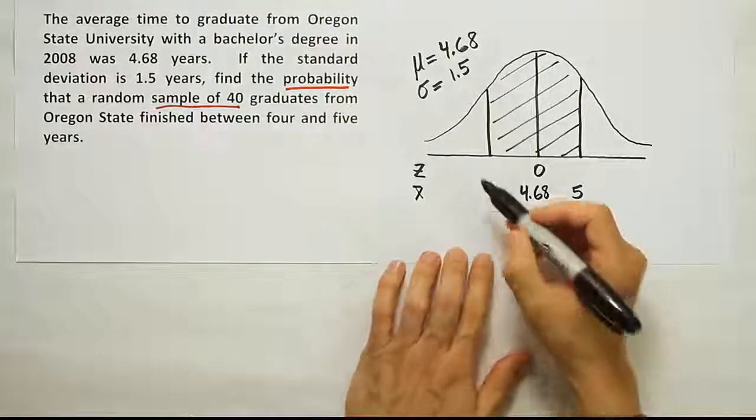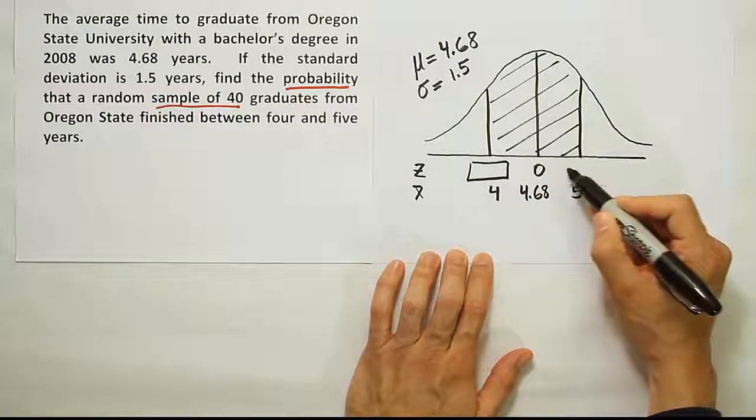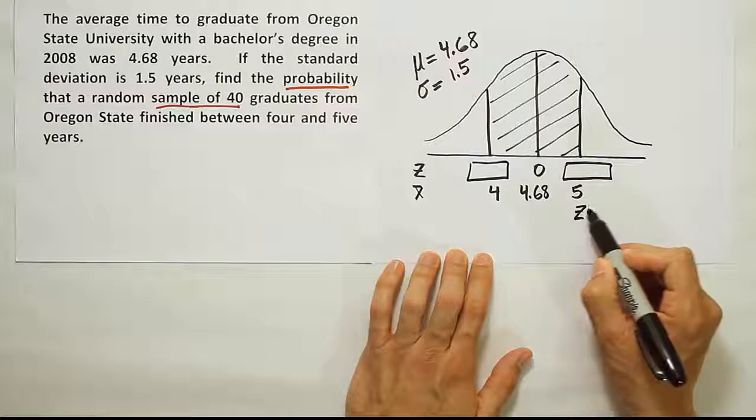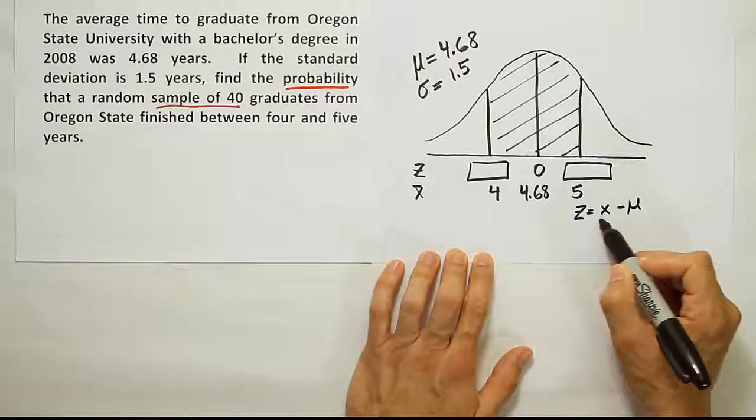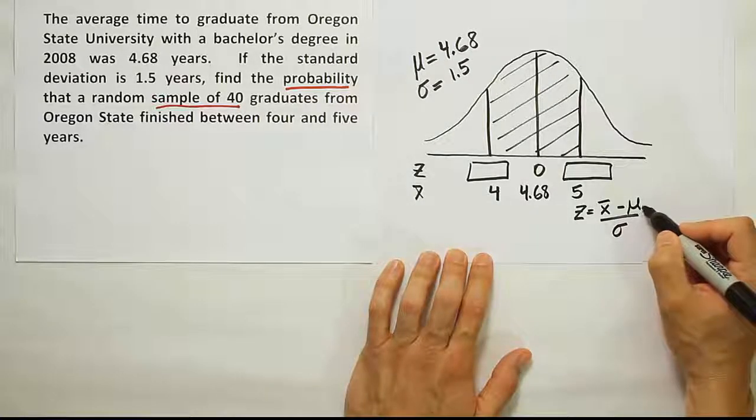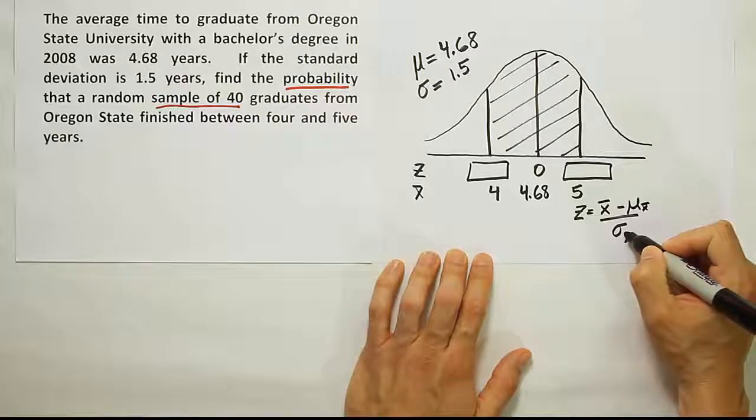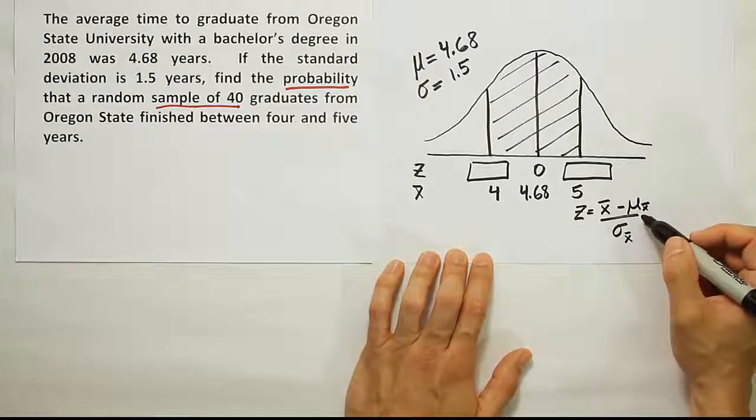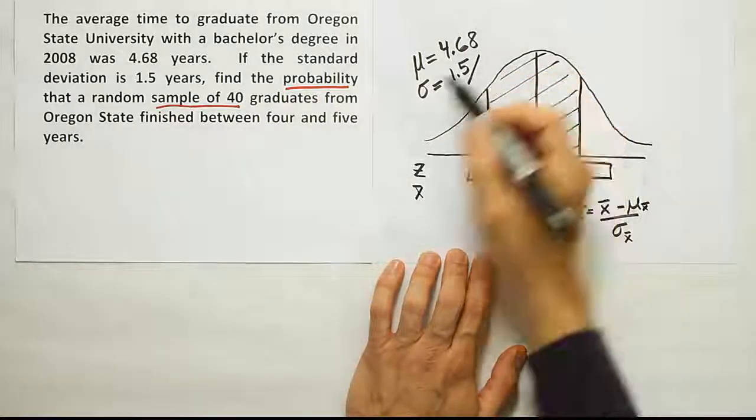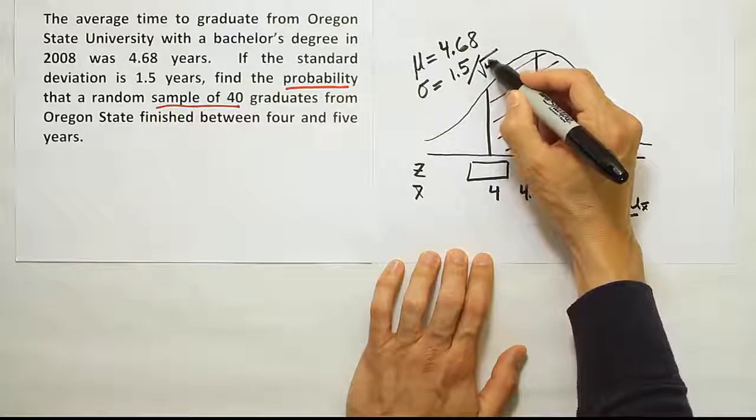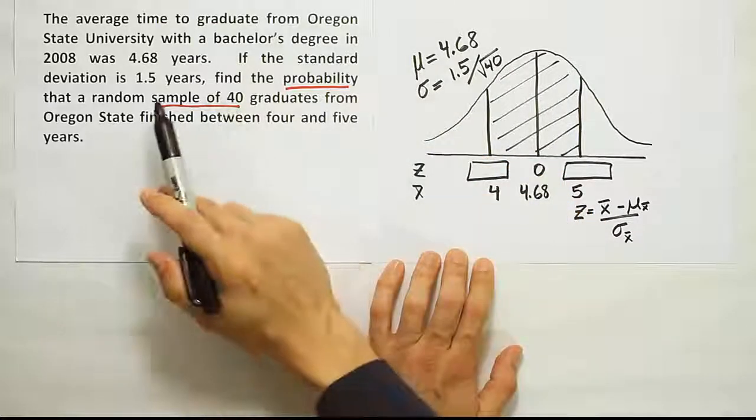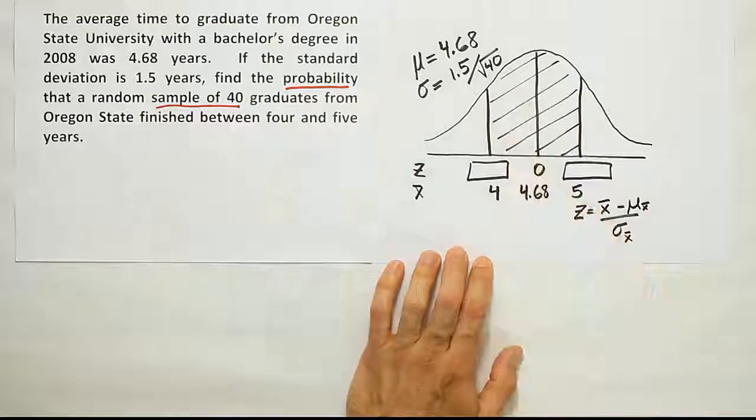Now at this point what we want to do is convert these guys into z scores. So I'll convert 4 and 5 into z scores. Using the standard z score formula we've used in the past, z is equal to x minus the mean over sigma. The only change here is because this is x bar, we'll call it x bar. We'll call this the mean for x bar and the standard deviation for x bar. The only major difference is that when we come over here and we look at this sigma, we're going to have to adjust it by dividing by the square root of n. Remember that's a very important step. When you're working with x bar, you can't use the standard deviation they gave you. We have to adjust the standard deviation by dividing by the square root of n.